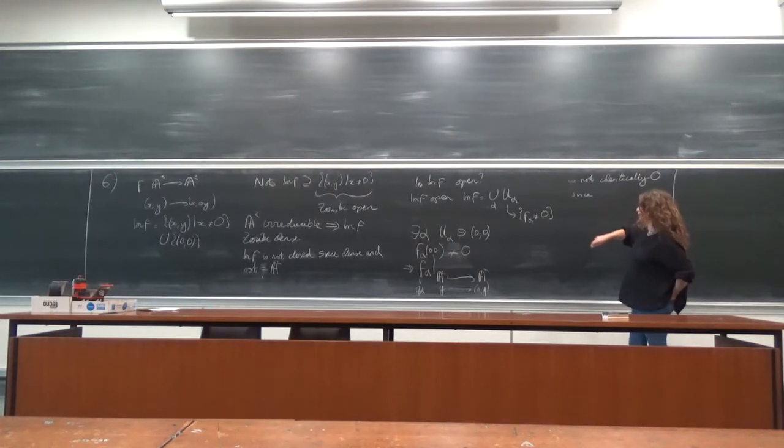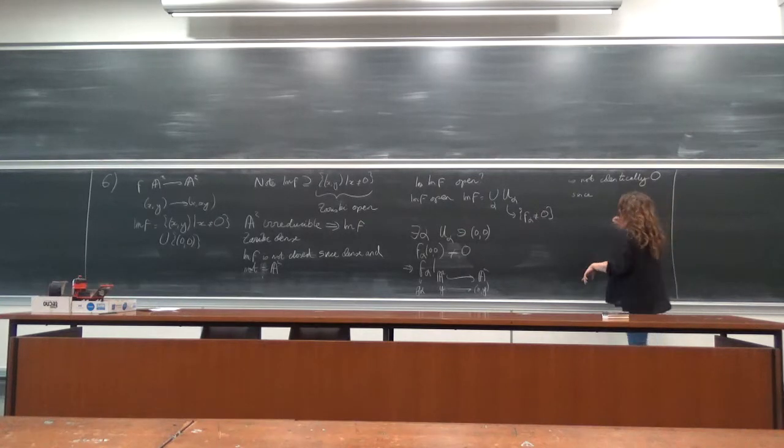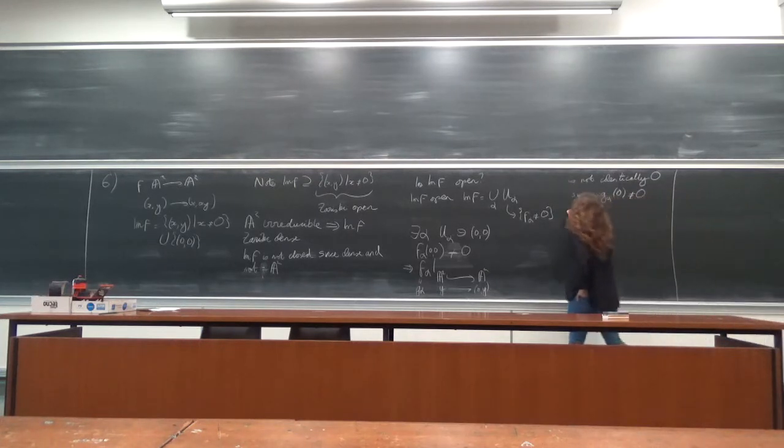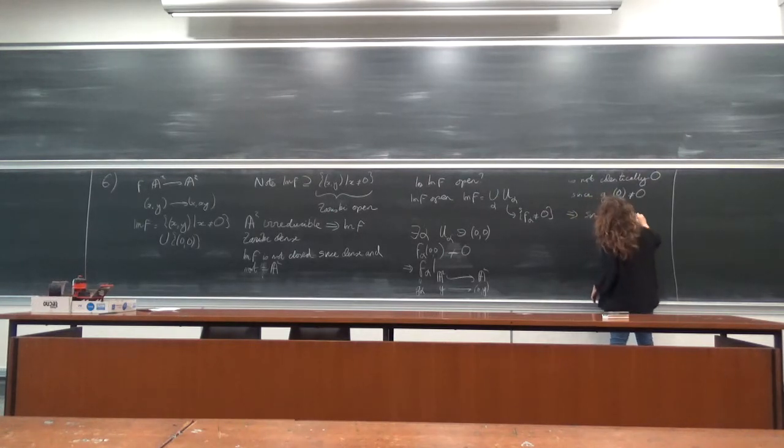So this is not identically zero, since I'm going to have that g_alpha of 0 is not equal to zero. And now this implies that, since A¹ is infinite...